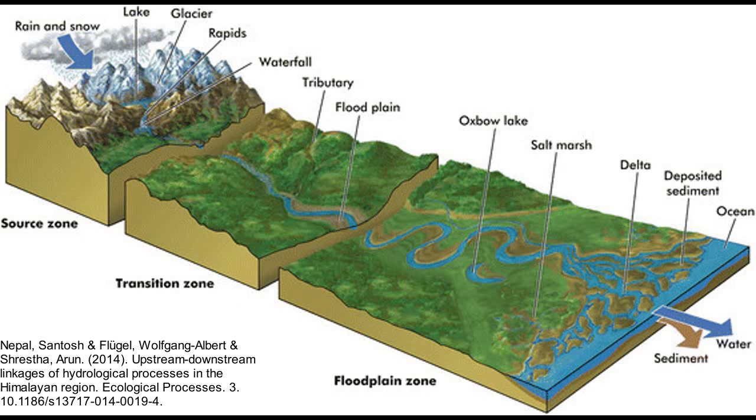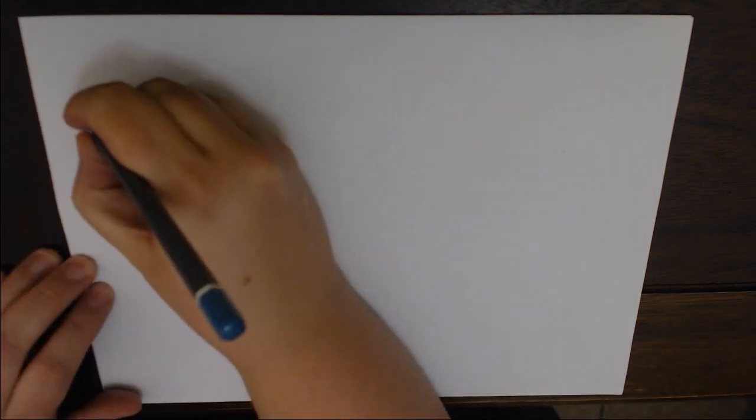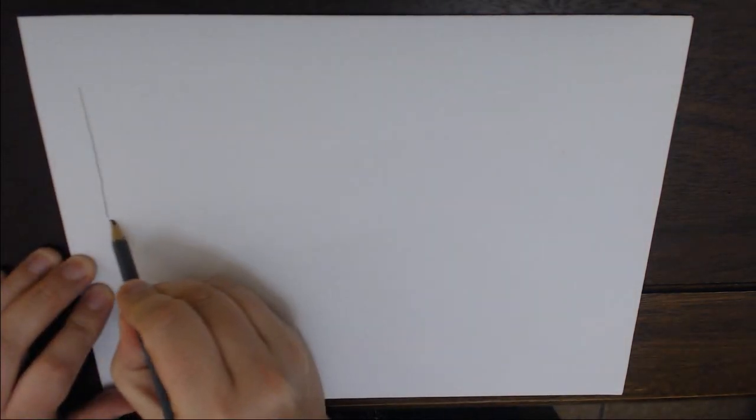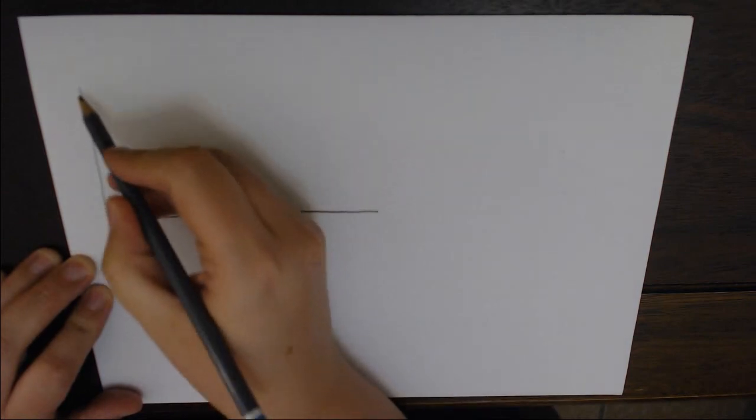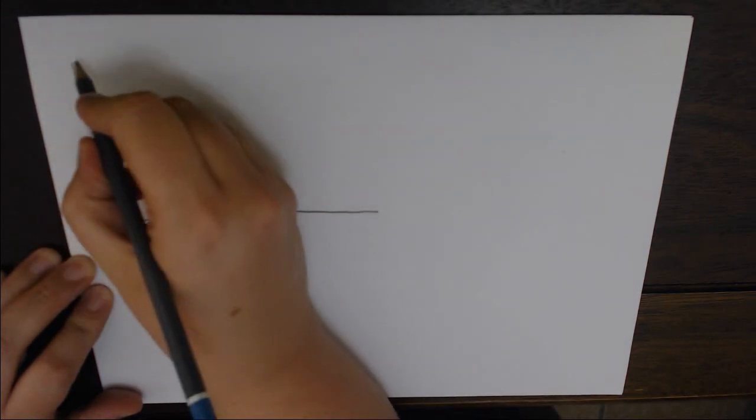This is the start of our fluvial processes section for metric geography. The first section we're going to look at is river profiles - the upper, middle, and lower courses of rivers, which you should hopefully be familiar with by now. This is a sketch of a longitudinal profile of a river.